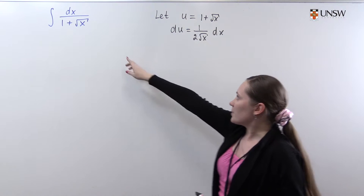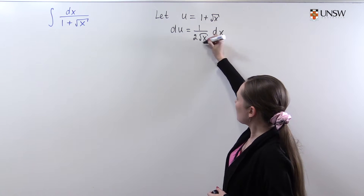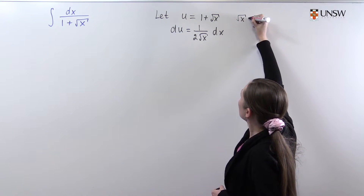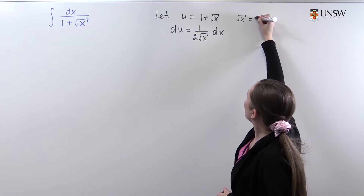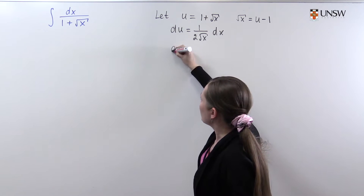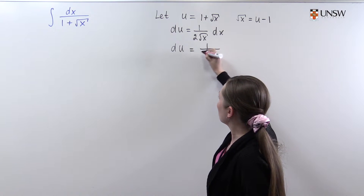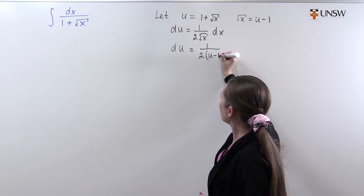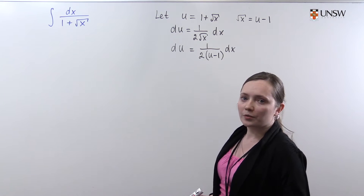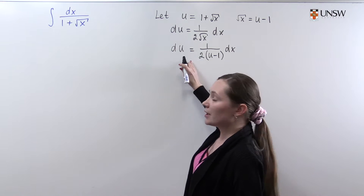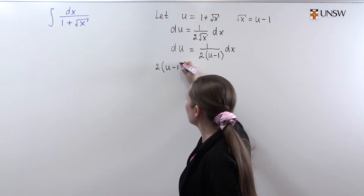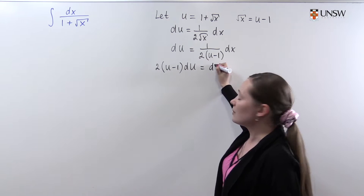When we do the substitution we also need to find square root of x, so we find it from here: square root of x is u minus 1. Substituting, we obtain that du equals 1 over 2(u minus 1) dx. Then to find dx in terms of u, we multiply both sides by 2(u minus 1) and obtain 2(u minus 1) du equals dx.